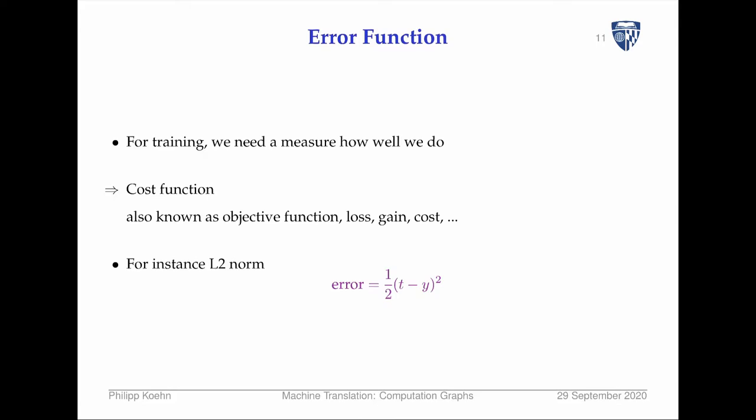One more thing we did in neural networks is to figure out the error. The computed output is 0.768, but we really wanted to have one. So we need an explicit measure of how much the error is. One error measure we introduced was the L2 norm, which has nice mathematical properties — it doesn't matter if the number is too high or too low, we count the same — and we can very easily take the derivative.